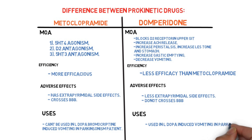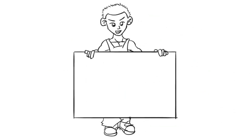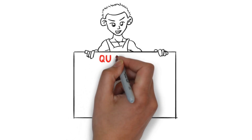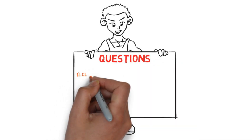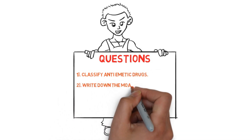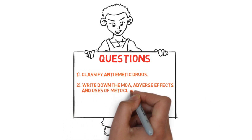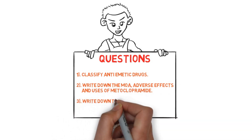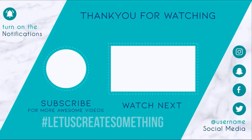Now for the question-and-answer part — questions which may be asked related to this topic in exams: Number 1, classify the antiemetic drugs. Number 2, write down the mechanism of action, adverse effects, and uses of metoclopramide. Number 3, write down the differences between metoclopramide and domperidone.